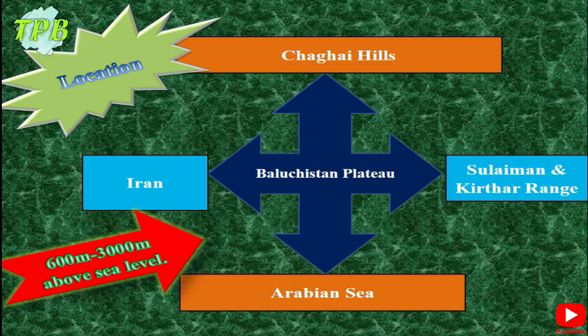There is also the Makran Coastal Range in the south before the plateau touches the Arabian Sea. The average height of the Balochistan Plateau is 600 to 3000 meters above sea level, so there is a lot of variation in the height of mountain ranges here. This area is marked with many parallel to sub-parallel ranges.